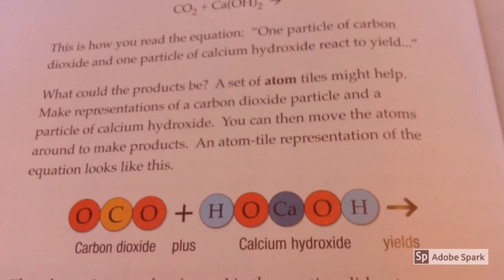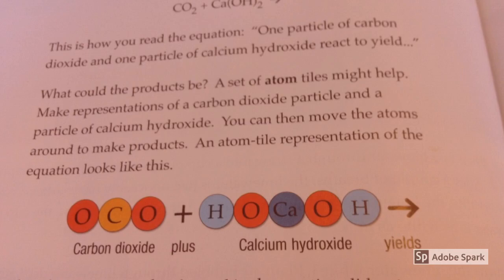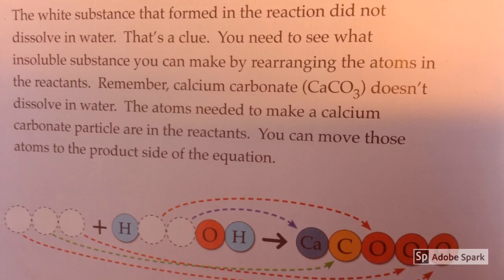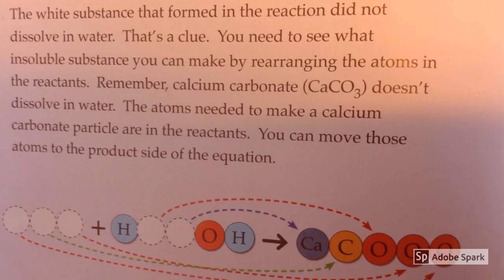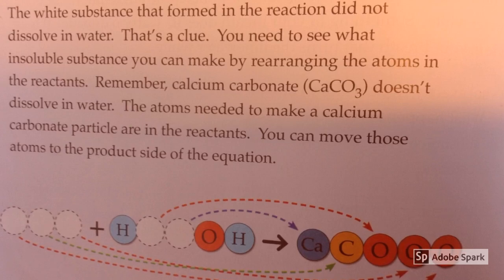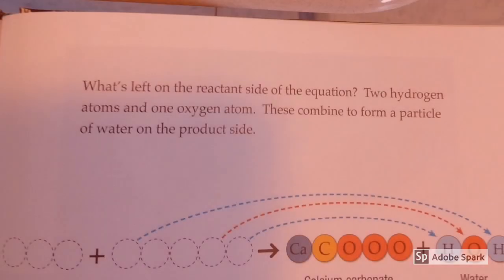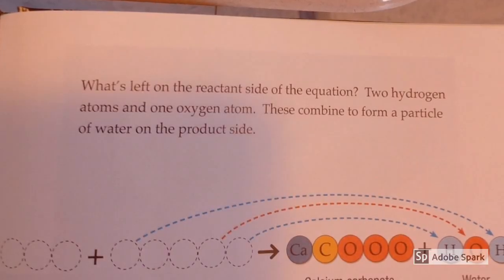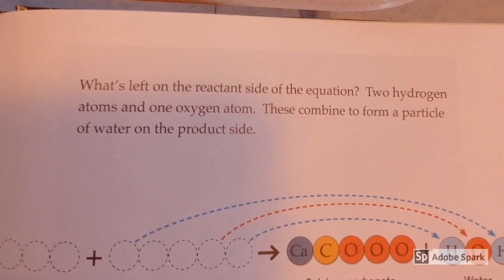This is how you read the equation: one part of carbon dioxide and one part of calcium hydroxide react to yield — what could the products be? A set of atom tiles might help. Make representations of carbon dioxide particles and a particle of calcium hydroxide, and you can move the atoms around to make products. An atom tile representation of the equation looks like this. What's left on the reactant side? Two hydrogen atoms and one oxygen atom — these combine to form a particle of water on the product side.